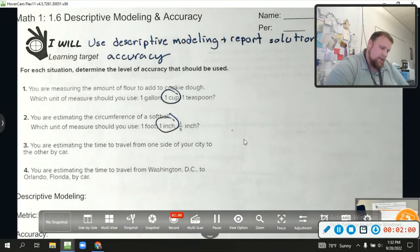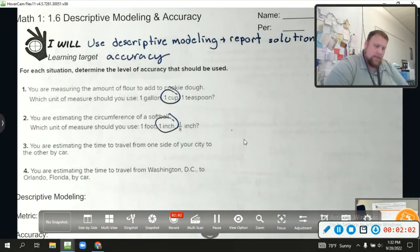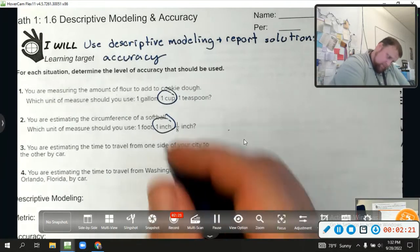You're estimating the time to travel from one side of your city to the other by car. Well, our town is Lebanon, so I don't think we need to use hours. I'm pretty sure it's minutes. Now, if we were in Portland, there could be an argument made for an hour or two, right? To get from one side to the other, depending on traffic, or some really big cities. But for our little town of Lebanon, excuse me, we're gonna go with minutes.